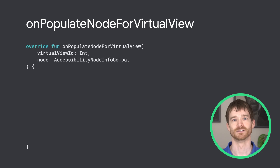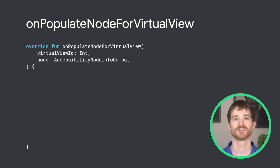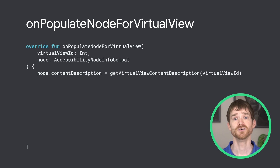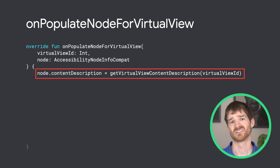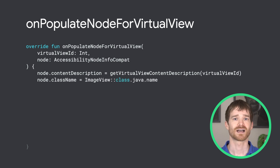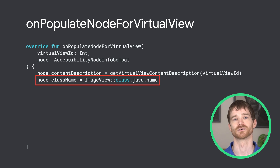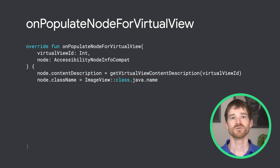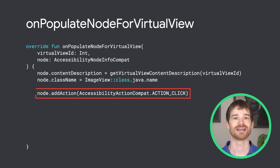Third, onPopulateNodeForVirtualView is where the accessibility node info should be populated. ExploreByTouchHelper has a method called createNodeForChild, which populates the accessibility node info with sensible defaults, like this is enabled, it's focusable, and visible to the user. You must set a content description — it should follow the same rules as a regular view's content description: keep it short and to the point, and don't forget to localize it. You should also set the class name, which TalkBack will use to identify the virtual view for the user. This should be set to the Android view most similar to what your virtual view represents — so text would be a text view, an image would be an image view, a button would be a button, etc. If this node should handle actions such as a click, they can be specified with the addAction method.